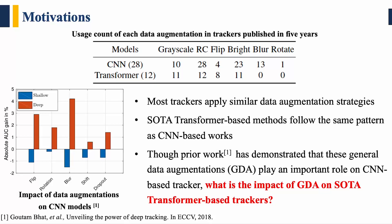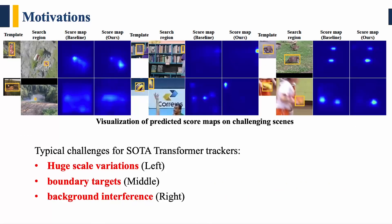To find the answer, we perform systematic experiments, and the results show that GDA has limited effects on SOTA trackers. Moreover, as shown in the figure, we found that many scenarios are still challenging for SOTA transformer trackers, such as huge scale variations, boundary targets, and background interference.